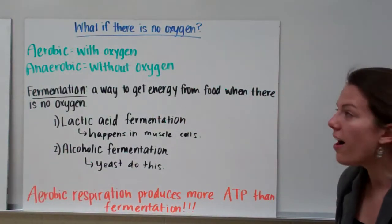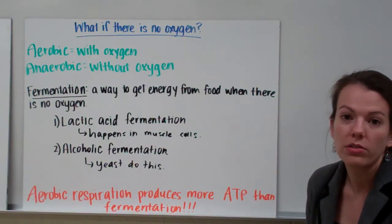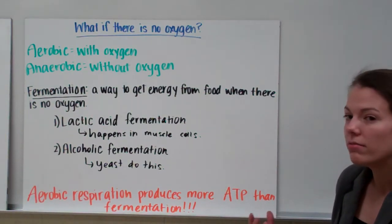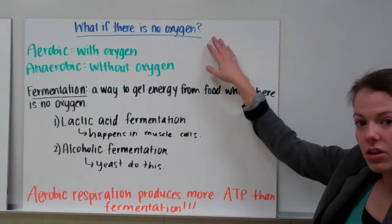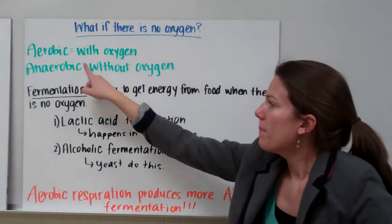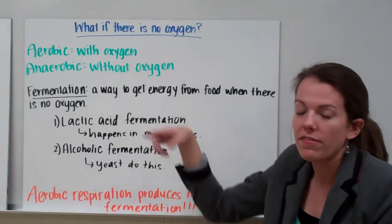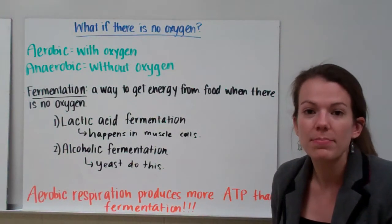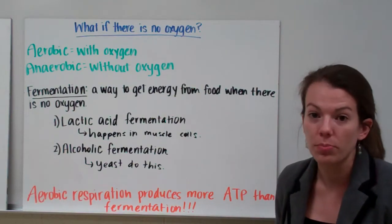Now, we said that oxygen is one of the requirements for respiration. But you might wonder what happens if there's no oxygen. We have two new words. Aerobic means with oxygen. If I say we're in an aerobic environment, that means an environment where there is oxygen present.